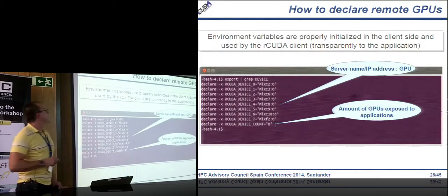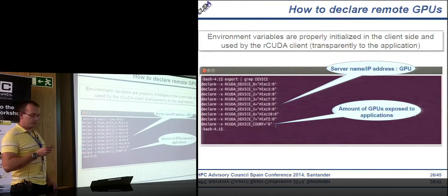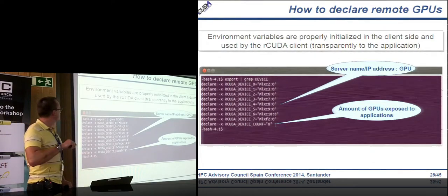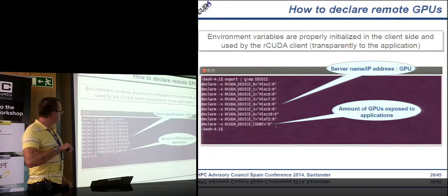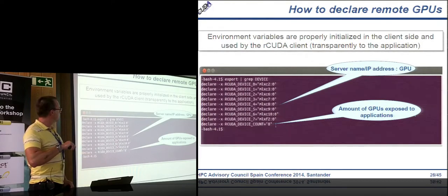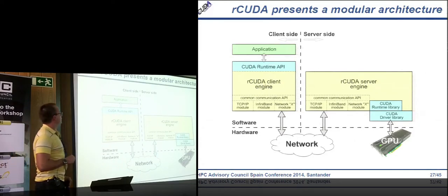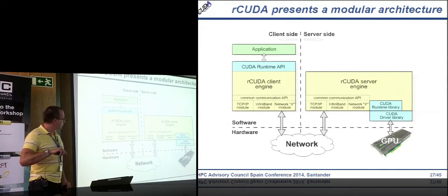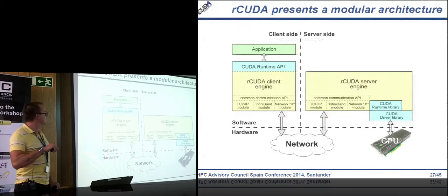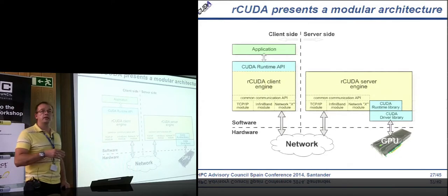To provide remote GPUs to an application, we simply declare two environment variables in the client node: one specifying the number of remote GPUs, and one specifying which nodes host those GPUs. Then we run the application — nothing else is needed. Regarding network support, rCUDA uses a modular architecture supporting TCP/IP and InfiniBand, and can support any future network.